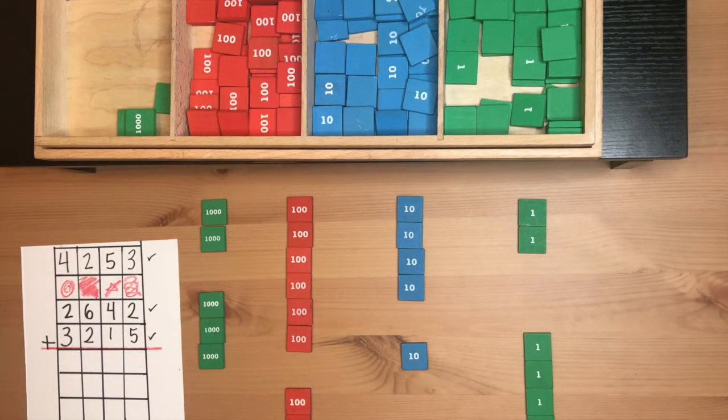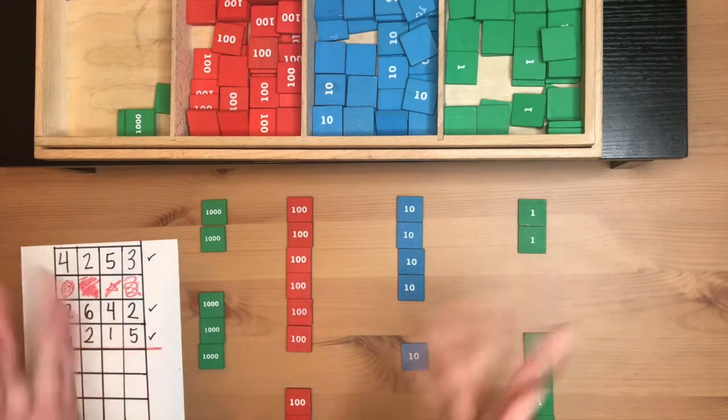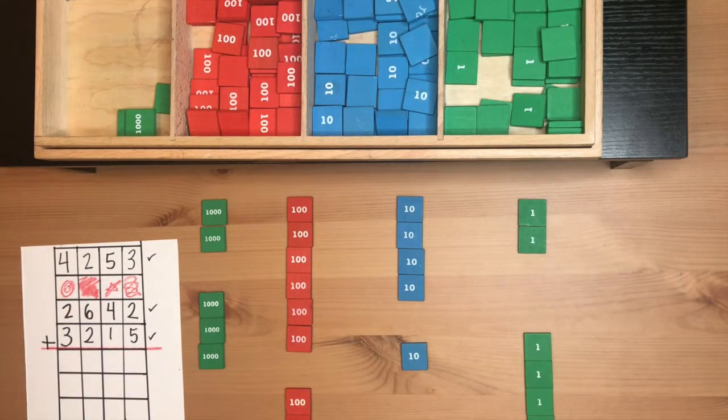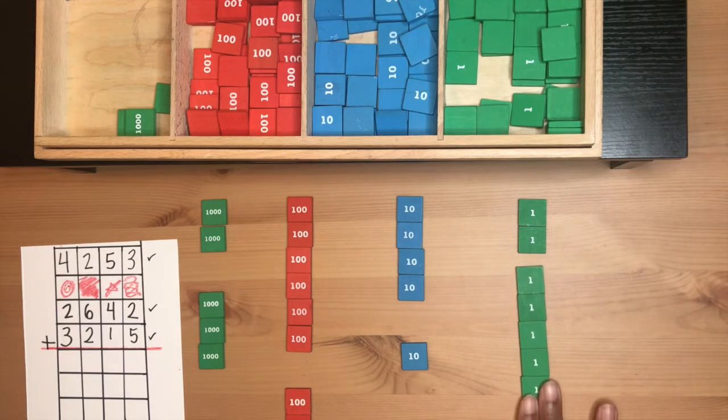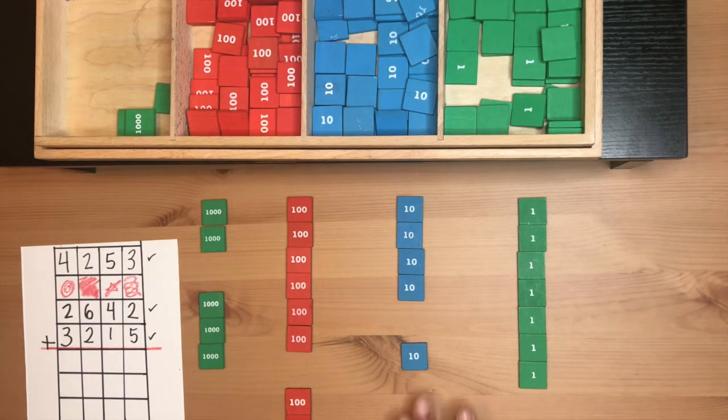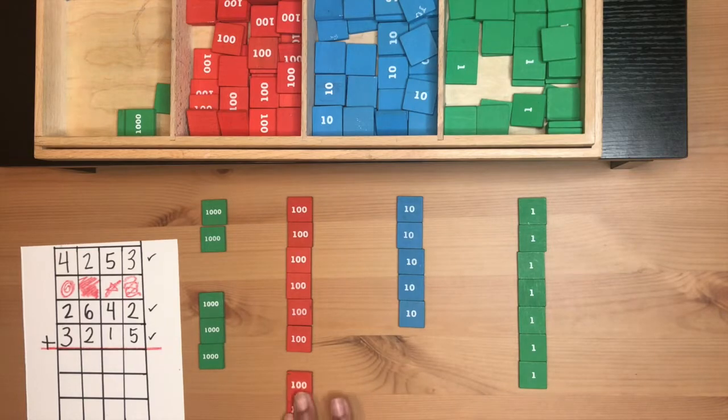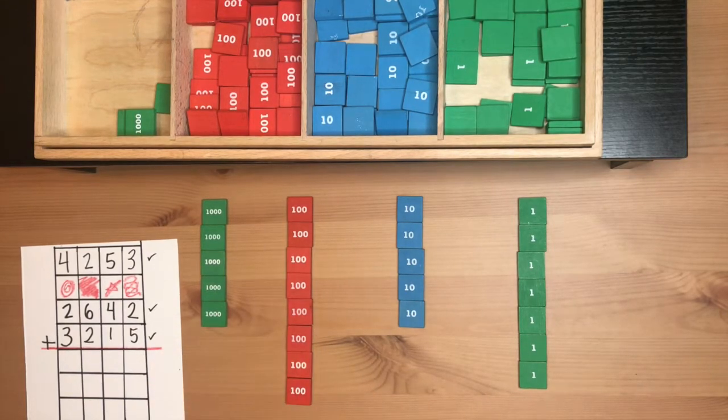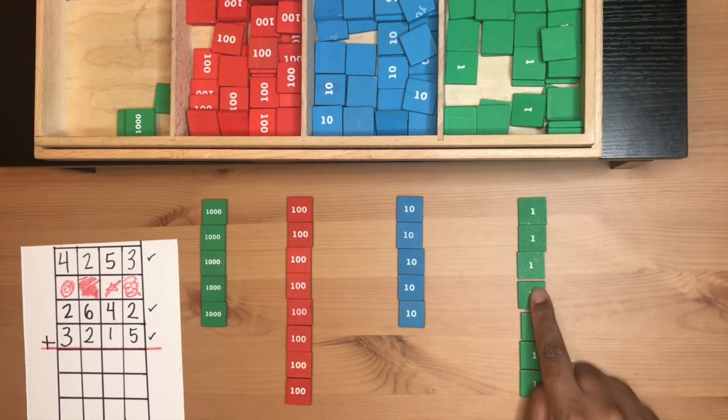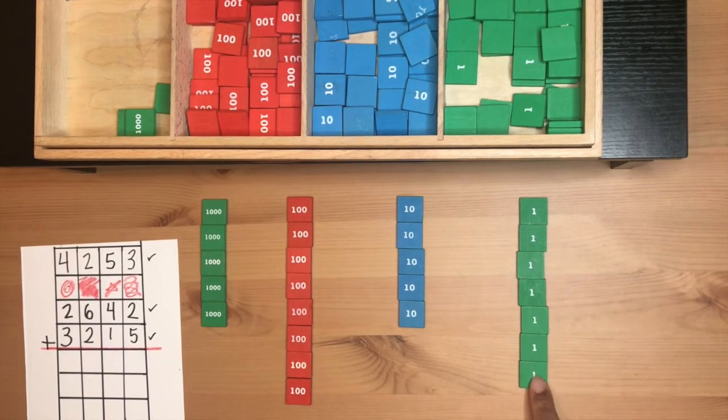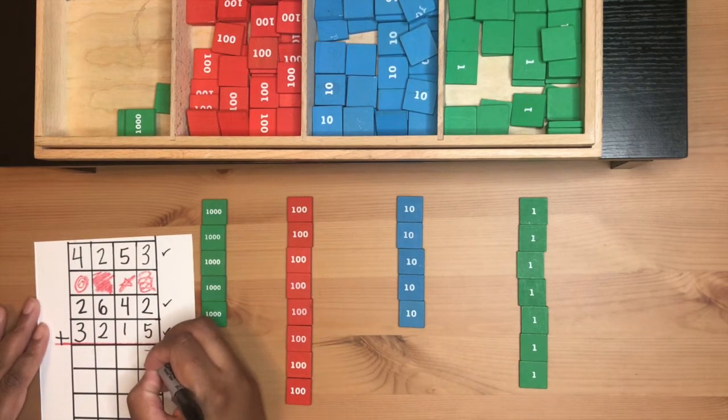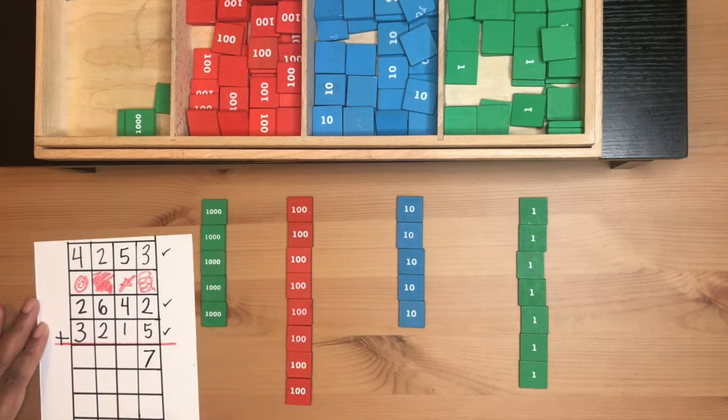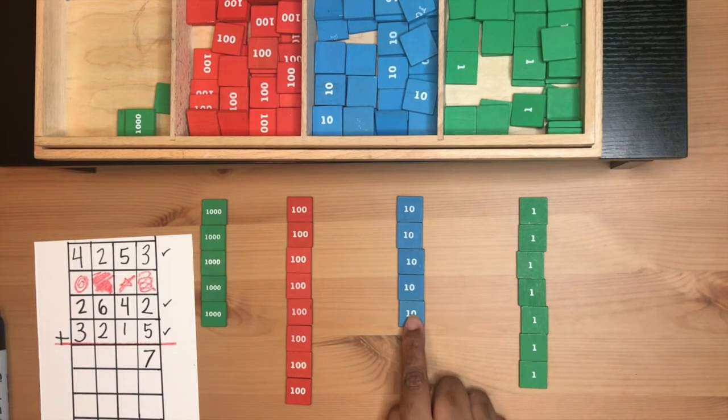Now when we do addition, we are going to need to push all the steps together. We're going to connect all the steps. And to get our answer, we're going to count all of them starting with the units. I've counted 7 units. I write 7.